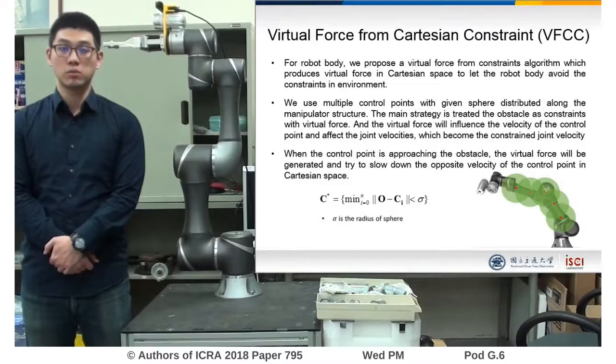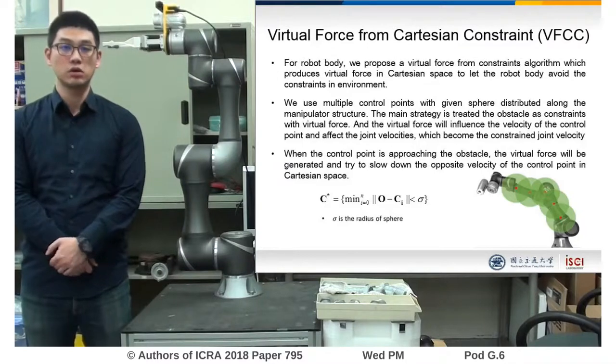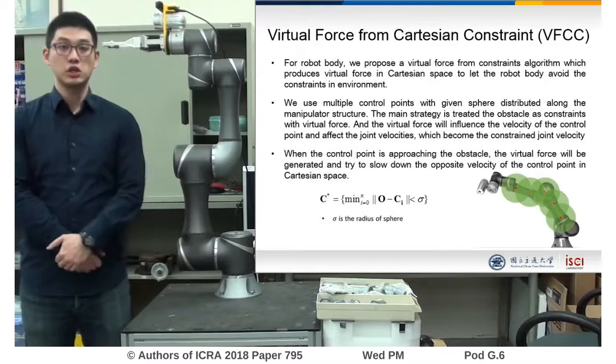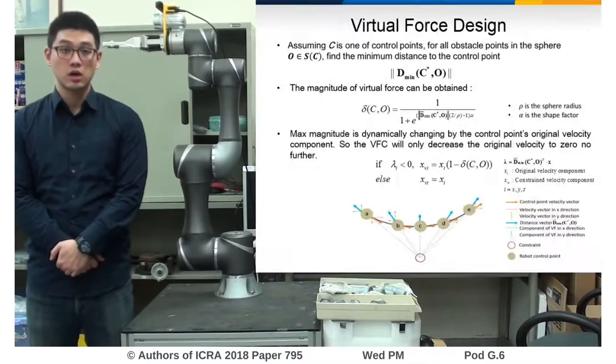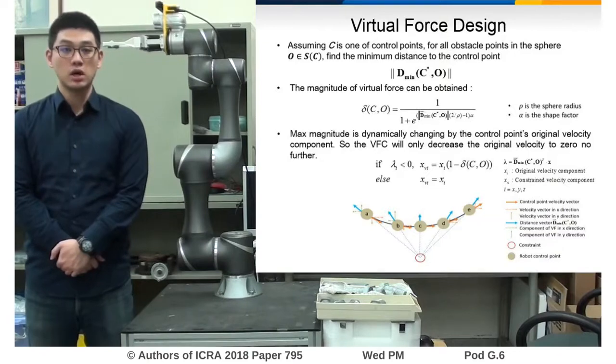We use multiple control points with given spheres distributed along the manipulator structure. The main strategy is to treat obstacle points as constraints with virtual force. So when approaching the obstacle point, the virtual force will be generated and try to slow down with the opposite velocity in Cartesian space.